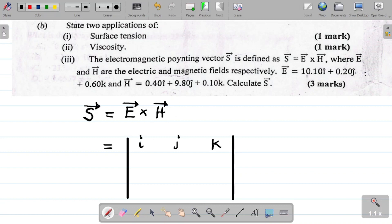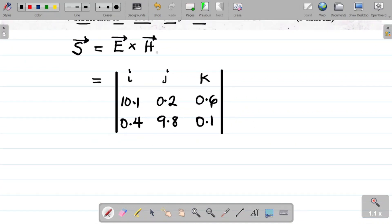For E, let me put the coordinates. E is 10.10i, so for E I have 10.10i. Then I also have 0.20j, so for j I have 0.2 or 0.20j. For k, that's this one here, I have 0.6, so it becomes 0.6 of k. For H, I have for i the coefficient of i for H as you can see here is 0.4, so I'm having 0.4i. For j, it's 9.8, that's 9.8j. For k, it's 0.1, so I have 0.1k.